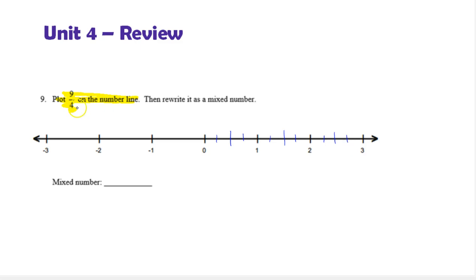Now to plot 9 fourths, I'm going to start at 0 and count 9 fourths to the right. So 1, 2, 3, 4, 5, 6, 7, 8, 9.